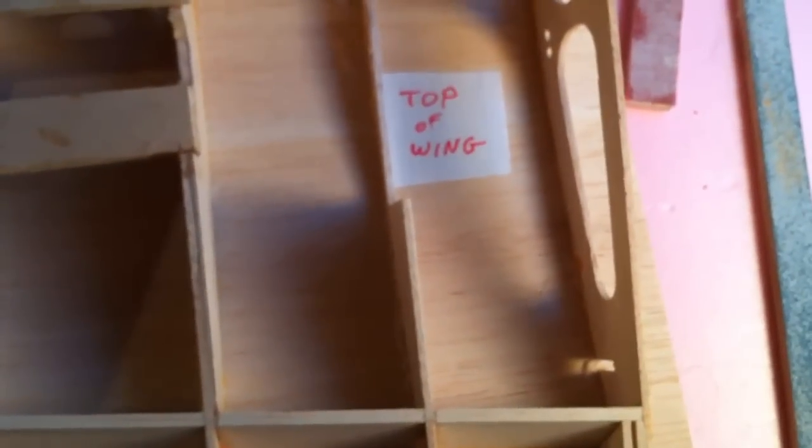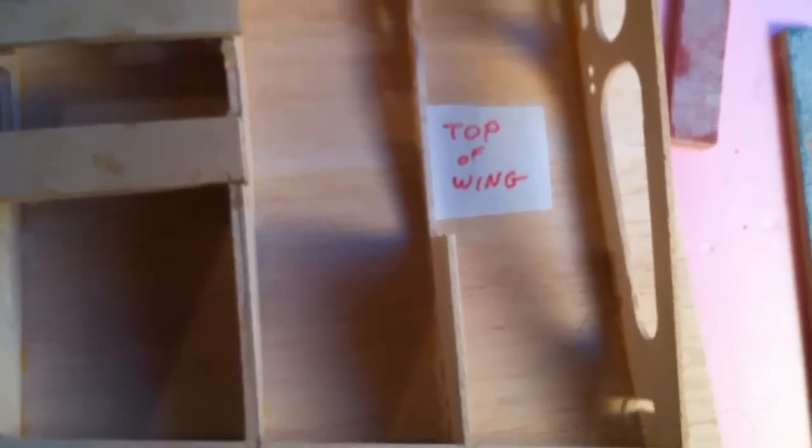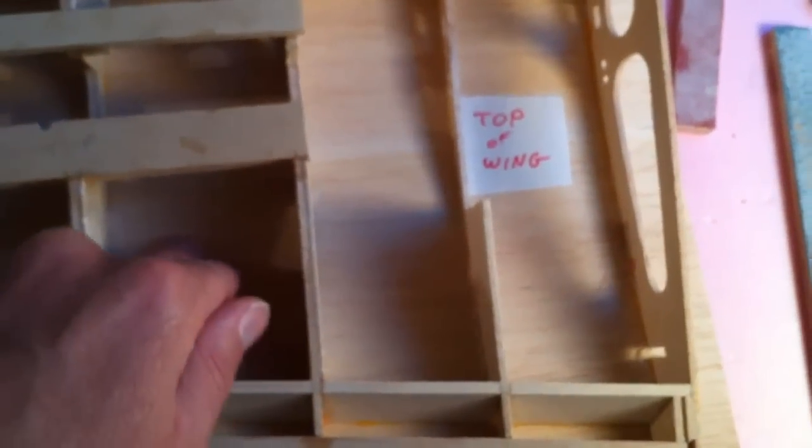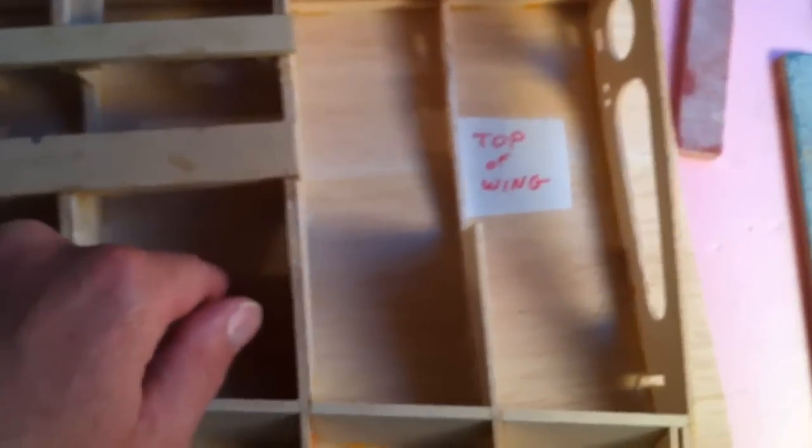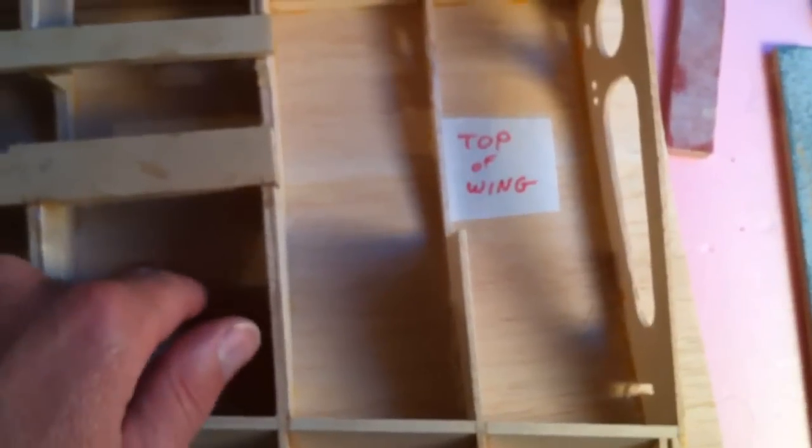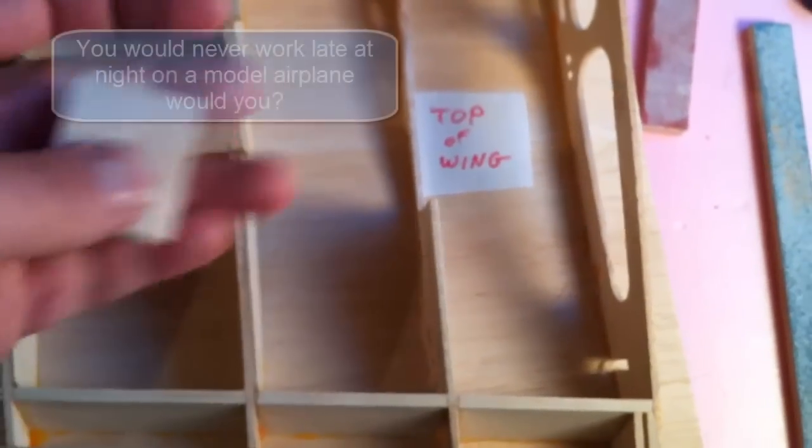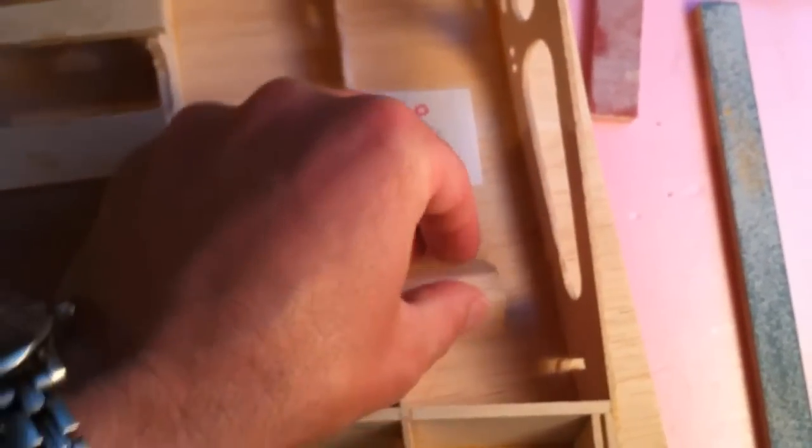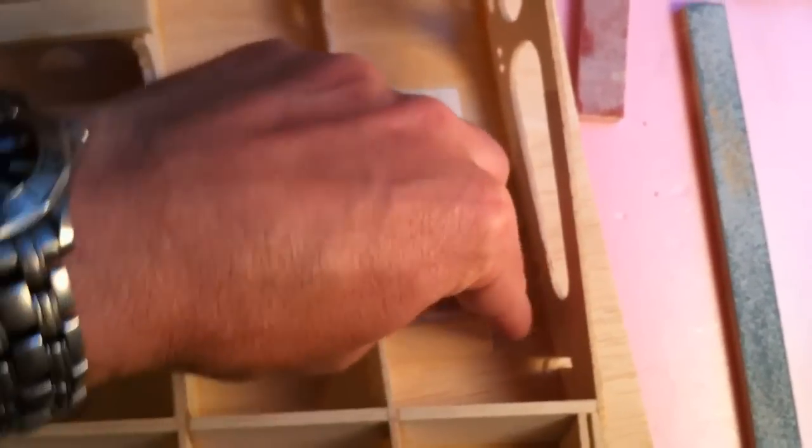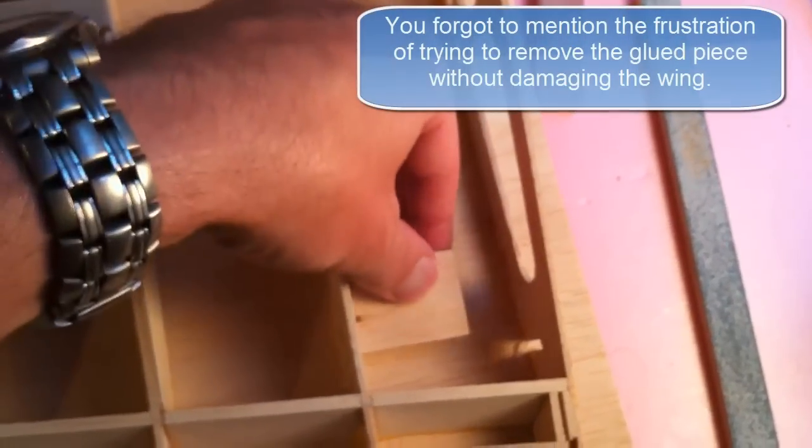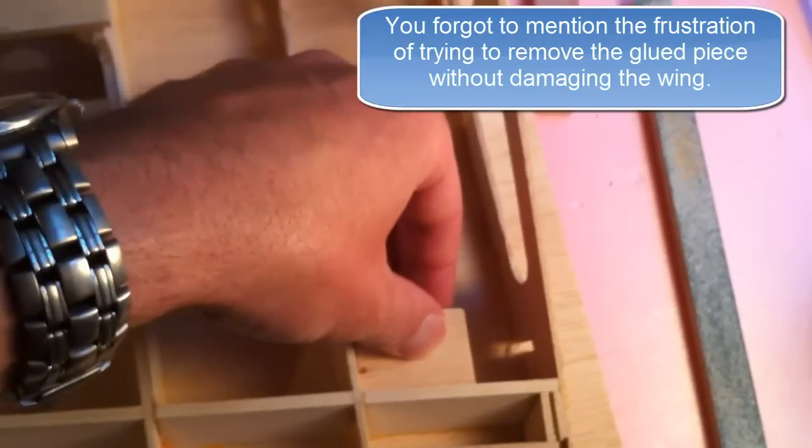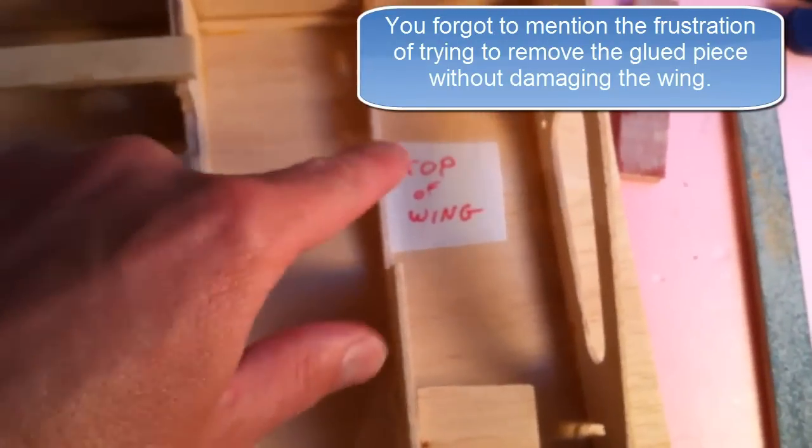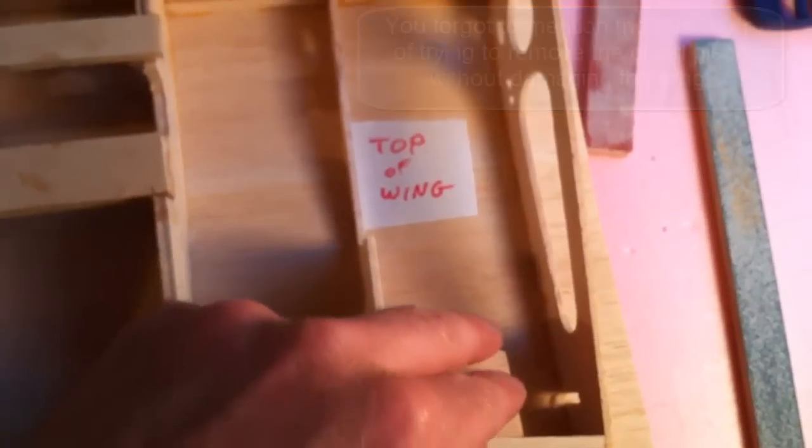So just a friendly reminder, sometimes label parts of the wing or whatever you're working on, the surfaces, just to eliminate any confusion on your part, especially if you're working late at night, to make sure that you place your parts on the proper side. Don't make the mistake of putting it in wrong or trying to glue it in wrong, and then finding out that if you had just labeled it, you would have eliminated any errors.